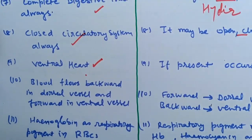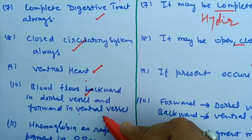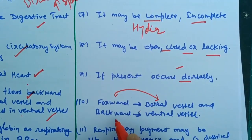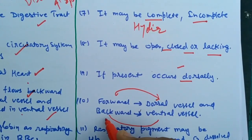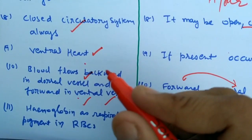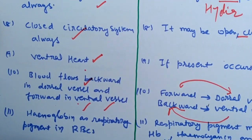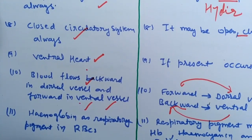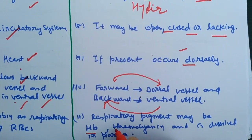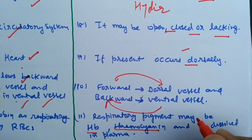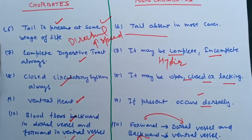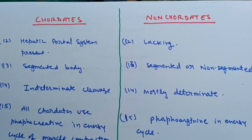In chordates, blood flows backward in the dorsal vessel and forward in the ventral vessel — the opposite is true in non-chordates, where forward flow is in the dorsal vessel and backward flow in the ventral vessel. Hemoglobin is the main respiratory pigment in chordates, occurring in red blood cells as an oxygen-carrying pigment. In non-chordates, there is no hemoglobin — it may be hemocyanin, dissolved in plasma, as no RBCs are found.